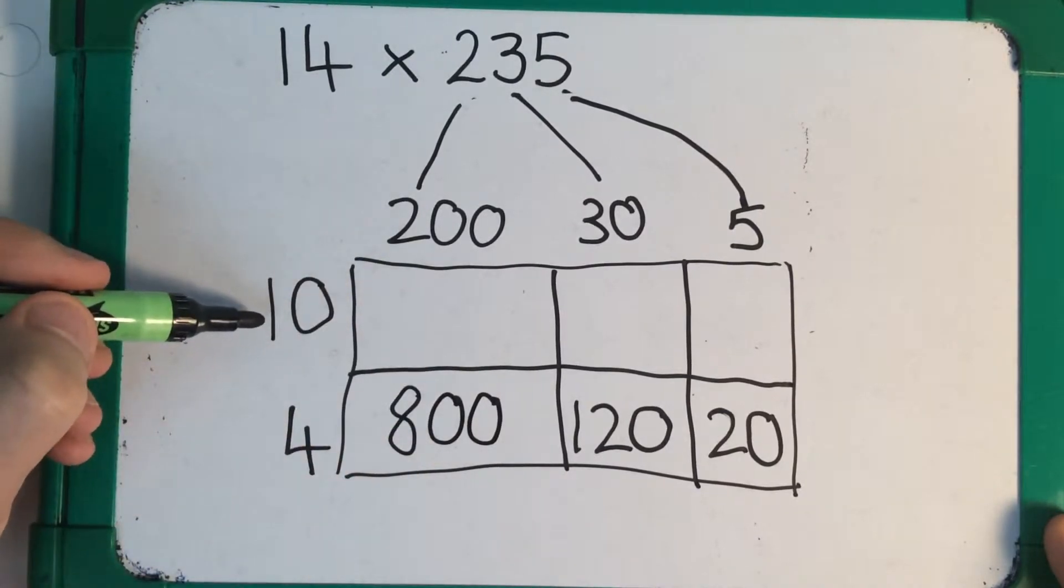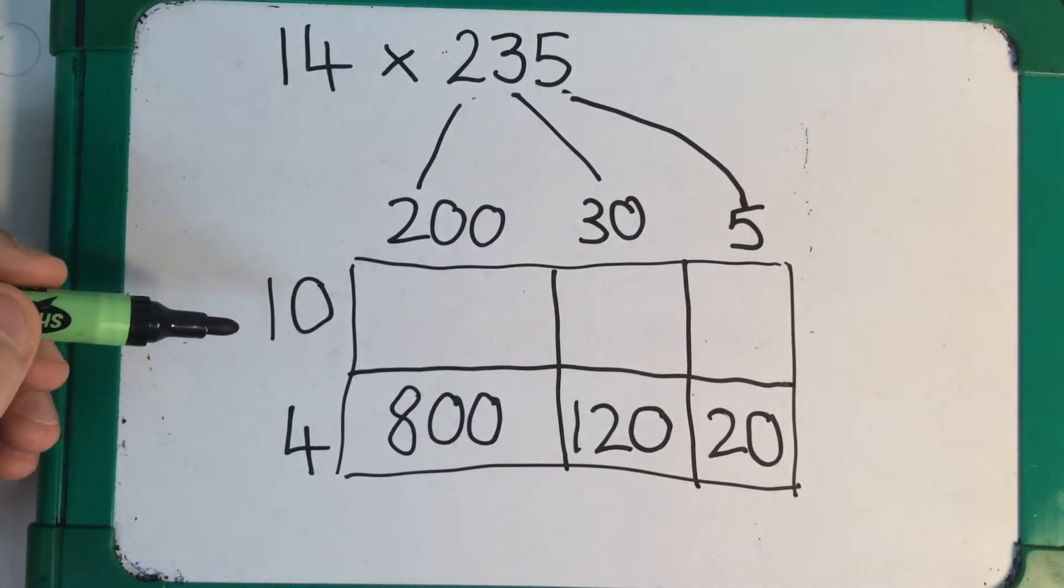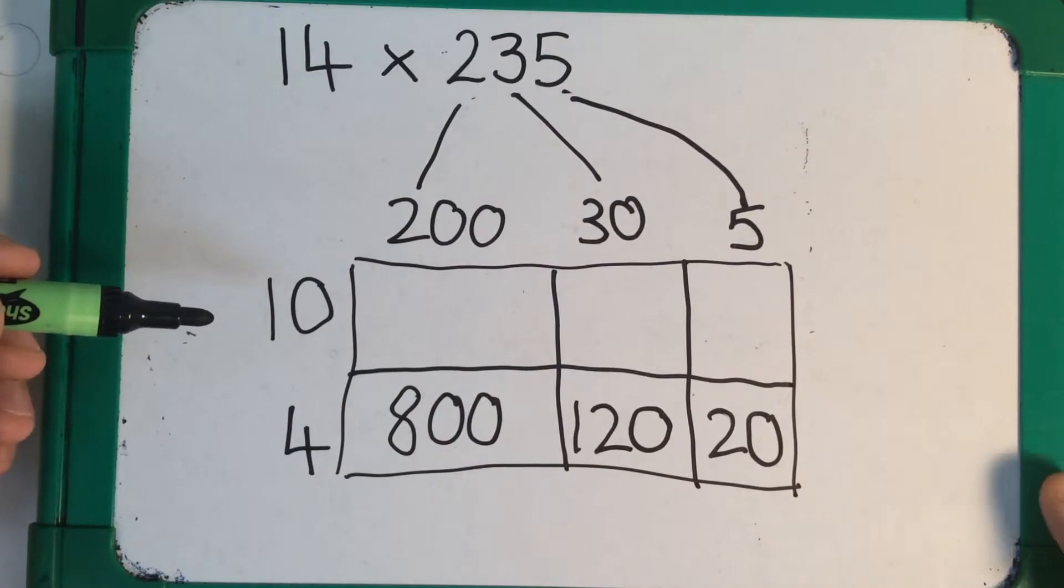OK, moving up to the top row. This should be quite easy because it's 10 times. And I know that 10 times any number is shifting the digits of that number one step to the left